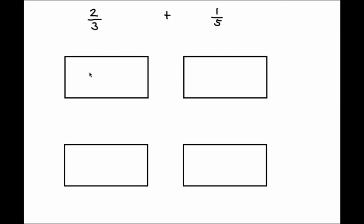Let's look at what's happening here. In this problem, we are asked to add 2 thirds and 1 fifth. What operation are we doing? We're adding, so we need to make sure we have the same units, denominations, or denominators. With 2 thirds we're dealing with thirds, and with 1 fifth we're dealing with fifths. They are not the same denominators, so we cannot begin to add until we make them the same.